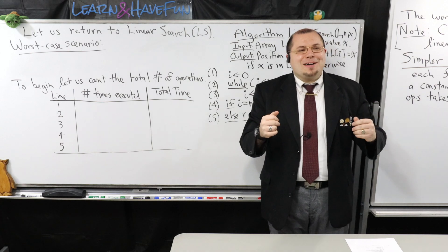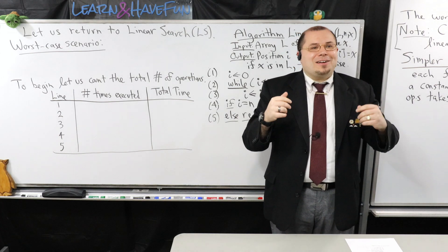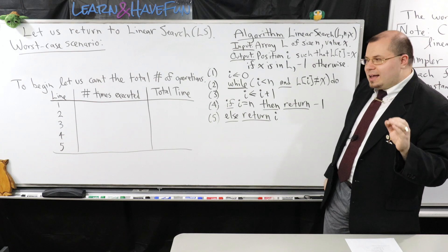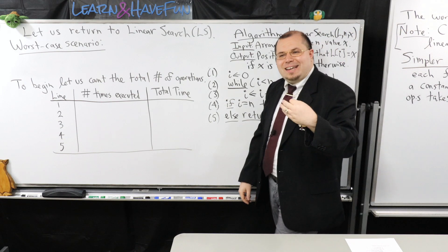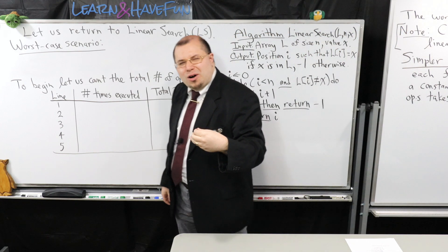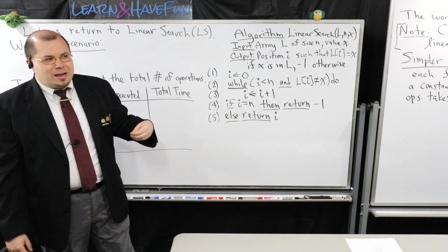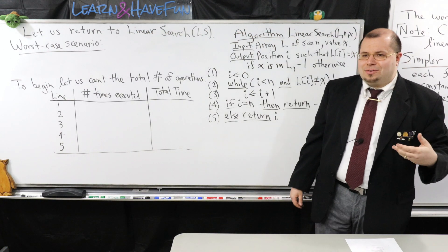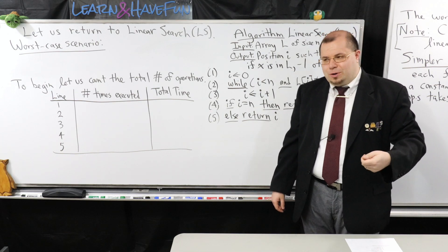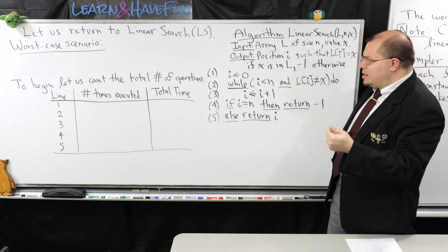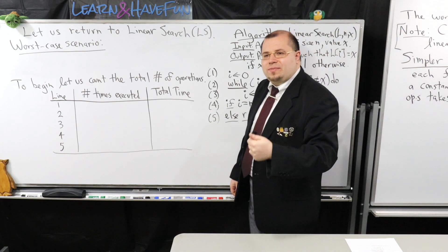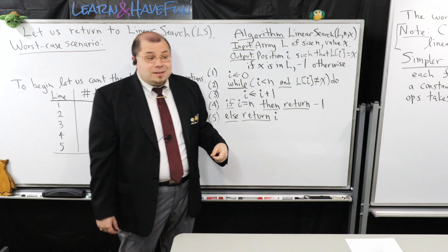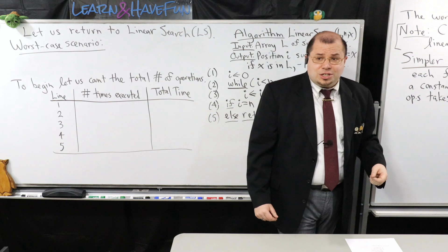Good morning, everybody. I hope everybody's having a wonderful day. Today we're going to be picking up from where I left off last day. Last day, I introduced the idea of a model of computation, and I talked about how there are issues we run into when we try to analyze an algorithm. For example, if I give you one implementation of an algorithm on a very specific computer and I time that, are there any drawbacks to this approach?